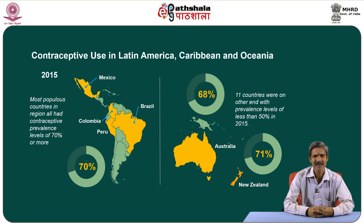The most populous countries of Latin America — Brazil, Colombia, Mexico, and Peru — all had contraceptive prevalence of 70 percent or more. Among the 16 countries of Oceania, Australia and New Zealand had very high levels of contraceptive use at 68 percent and 71 percent respectively. On the other hand, 11 countries in Oceania had contraceptive prevalence below 50 percent.